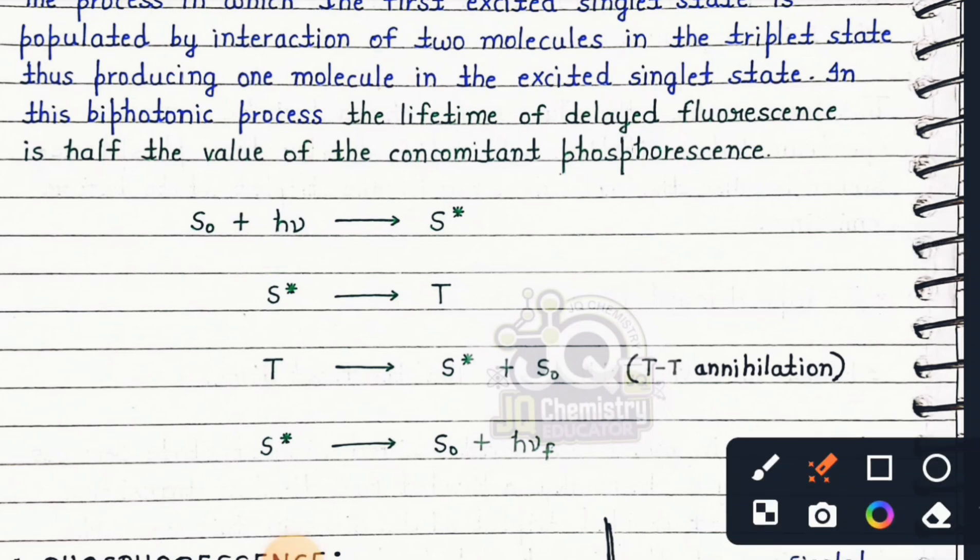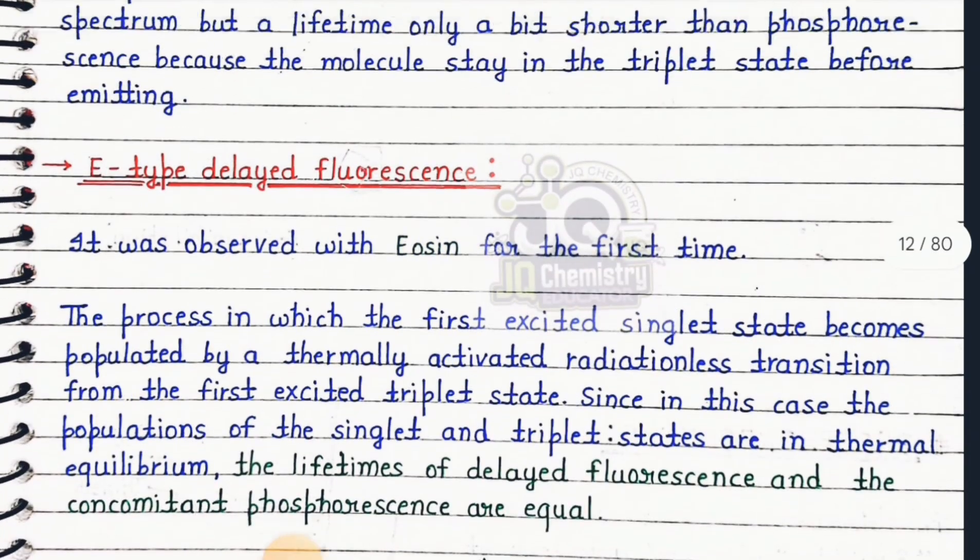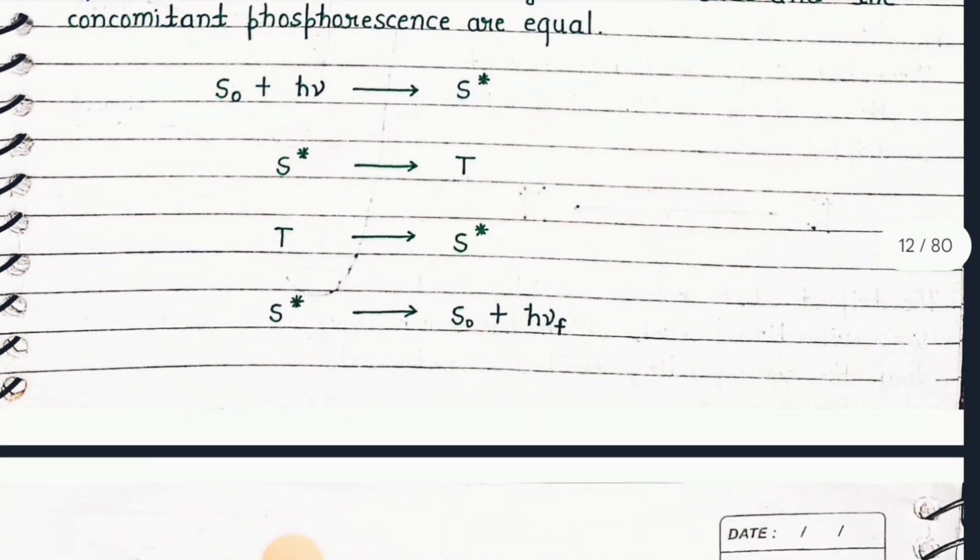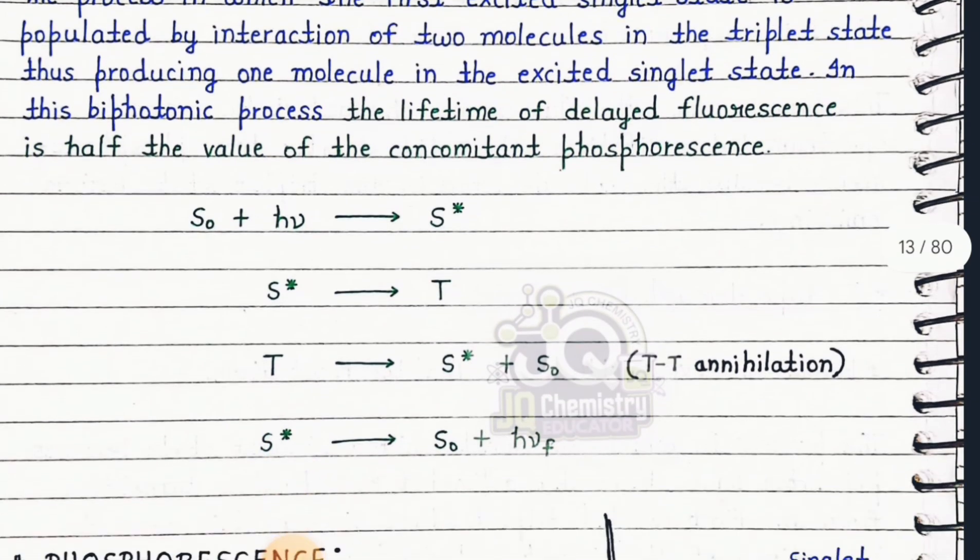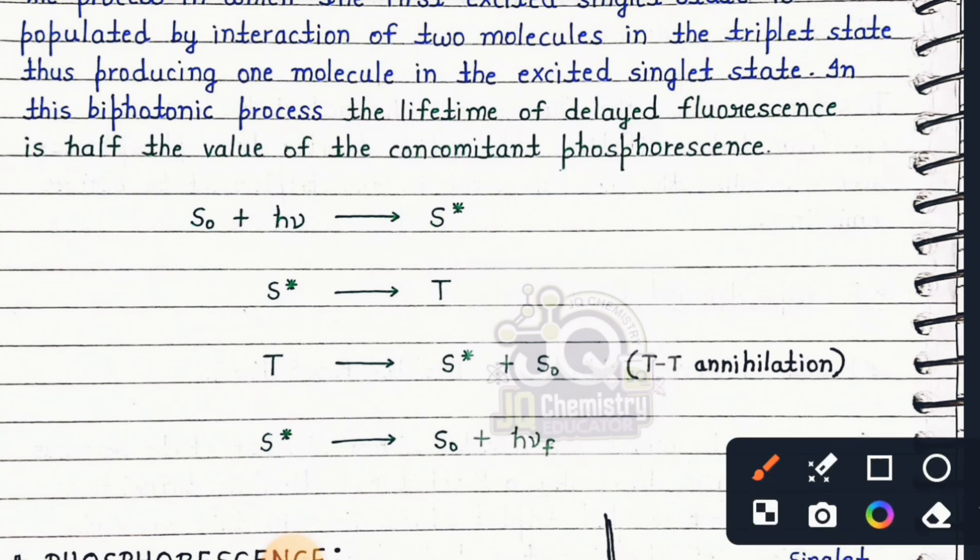What is happening in the first step is the same in this type: S0 + hν absorption going to excited state. Then the excited state comes from triplet state. In triplet state what is happening here is TT annihilation. The excited state then comes back, with this step being the same as the above.